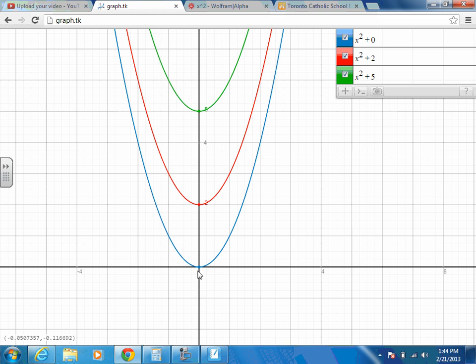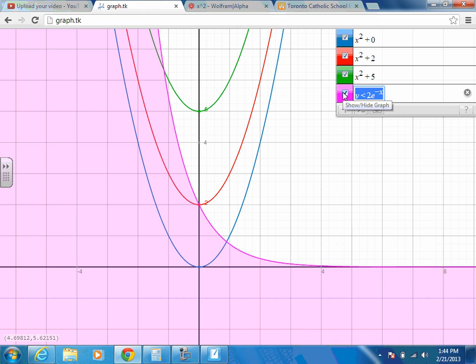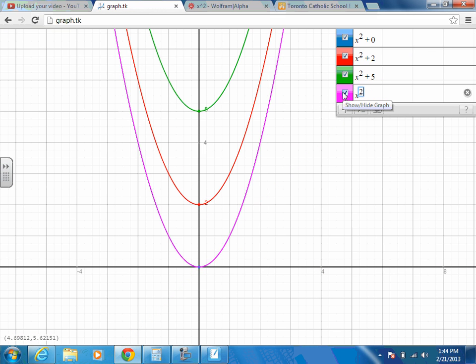All right? If it's negative, what do we think is going to happen? Probably going to move down. So, let's test this. X squared minus two. Lo and behold, what happened to this graph?